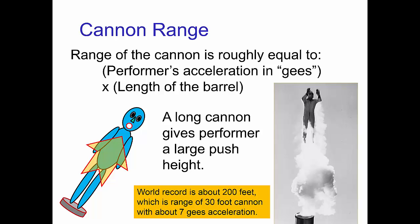if the acceleration is 7 G's and the barrel is 30 feet long, then the range is 7 times 30, which is 210 feet. And that's roughly the world's record for human cannonball.